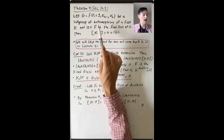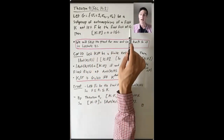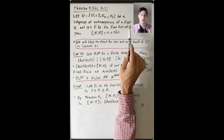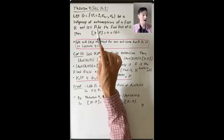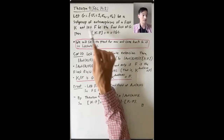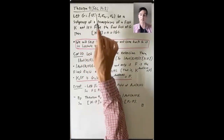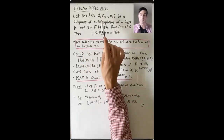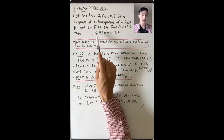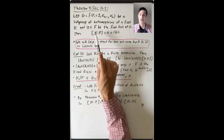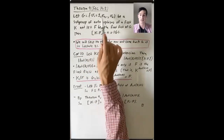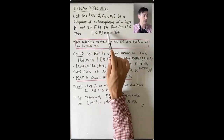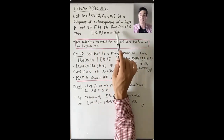Let F be the fixed field of G — the subfield of K consisting of all elements of K that are fixed by every automorphism in G. Then the degree of the extension K over F is the size of this group of automorphisms, N, which is the size of G.